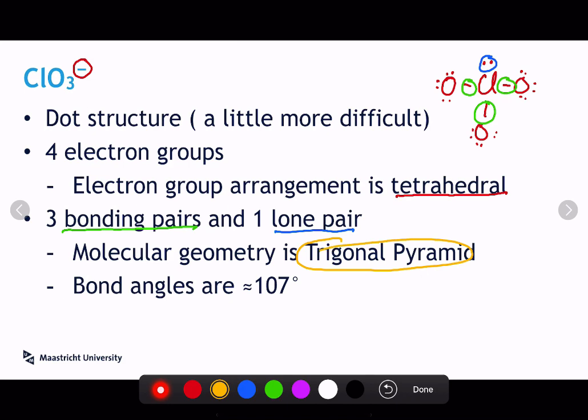And if we look at the bond angles, because of that lone pair pushing those bonding pairs in a little bit, about two degrees, we get a bond angle of about 107 degrees.